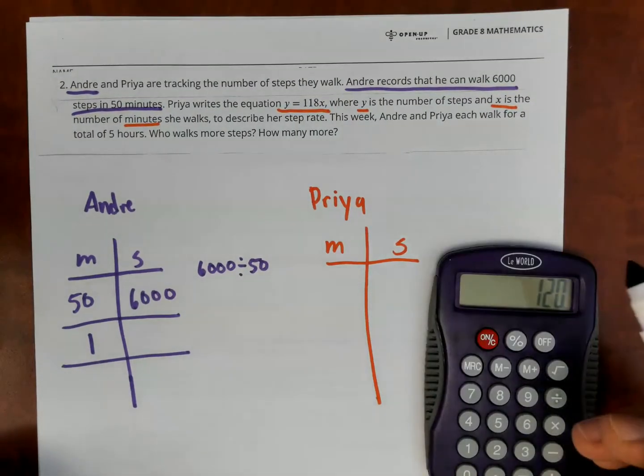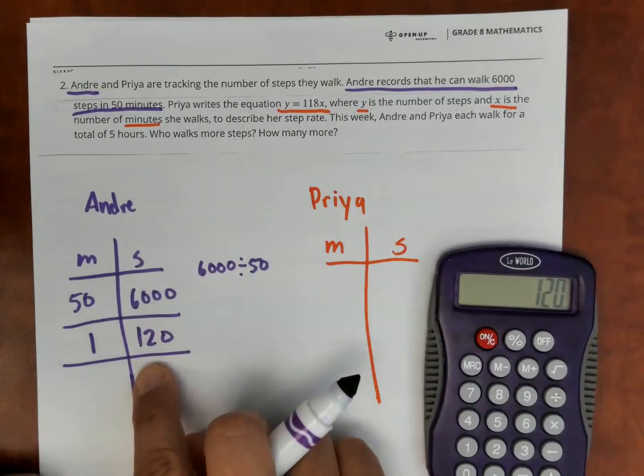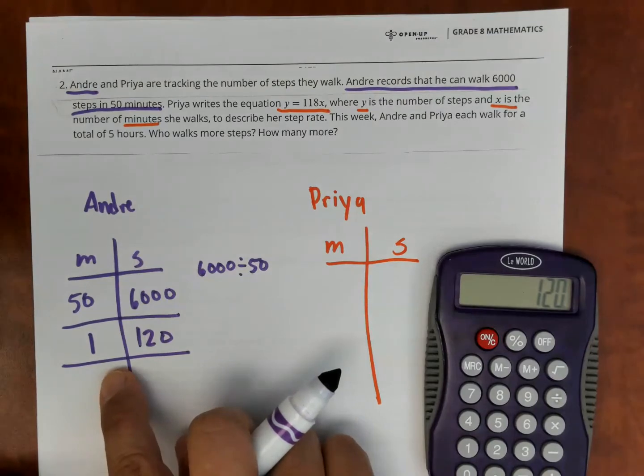I calculated it here, and I got 120. So I know that Andre takes 120 steps every minute.